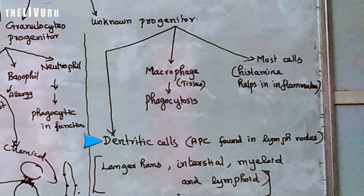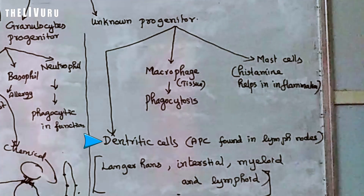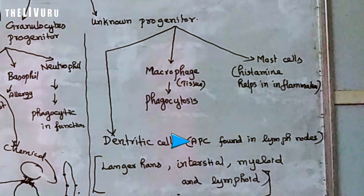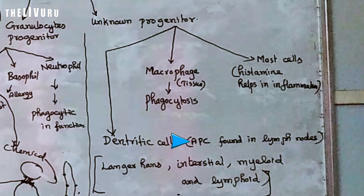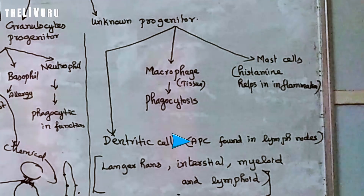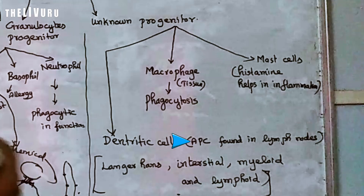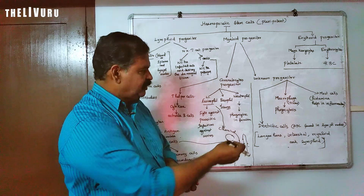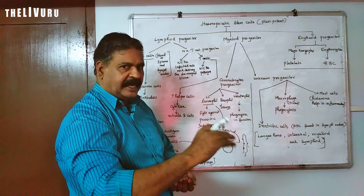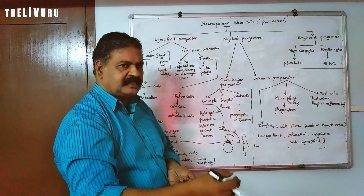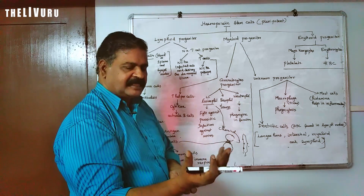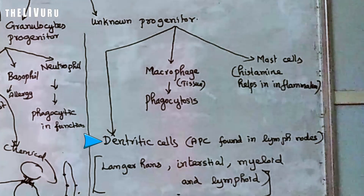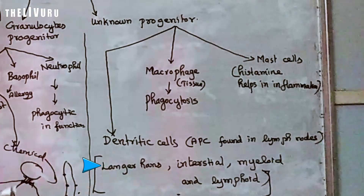Dendritic cells are the most important antigen-presenting cells found in lymph nodes. Macrophage, B lymphocyte, and dendritic cells are all antigen-presenting cells. A specific type is called Langerhans dendritic cells.